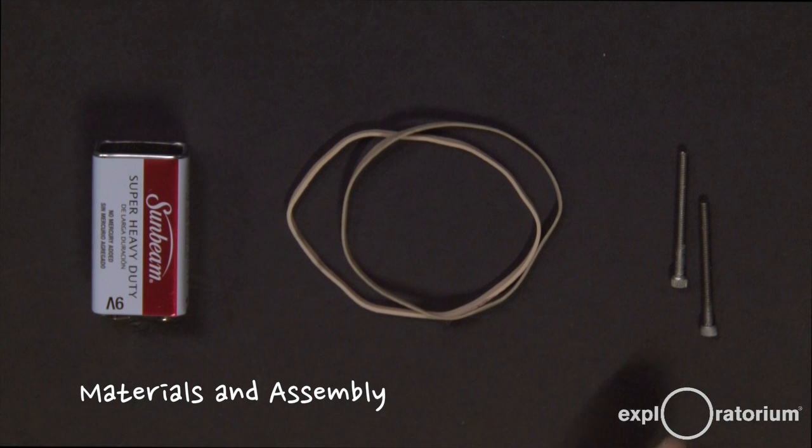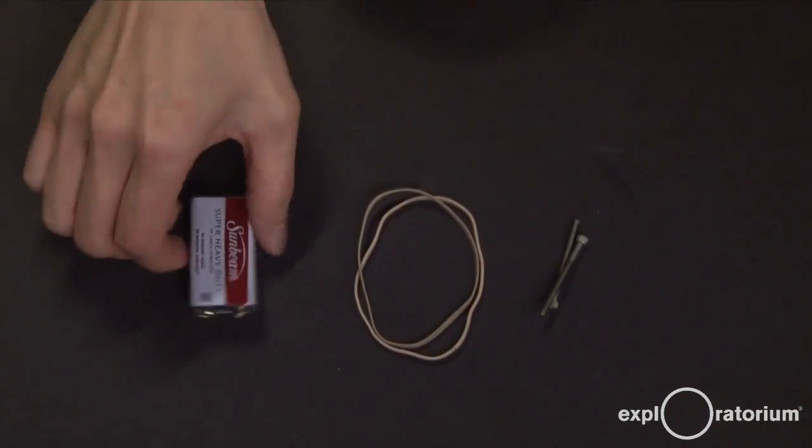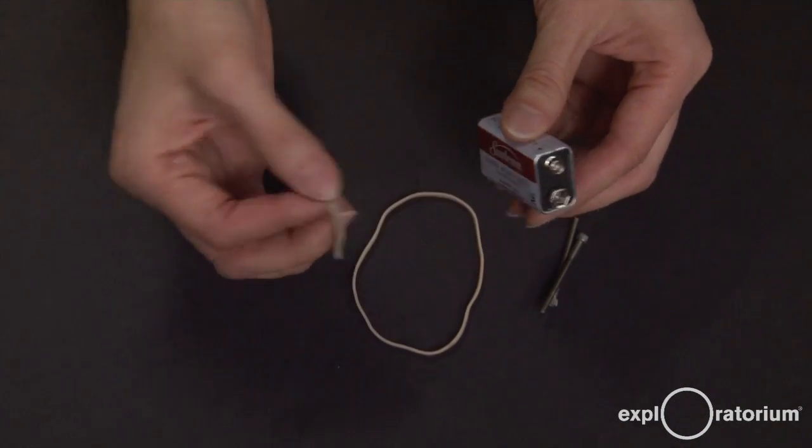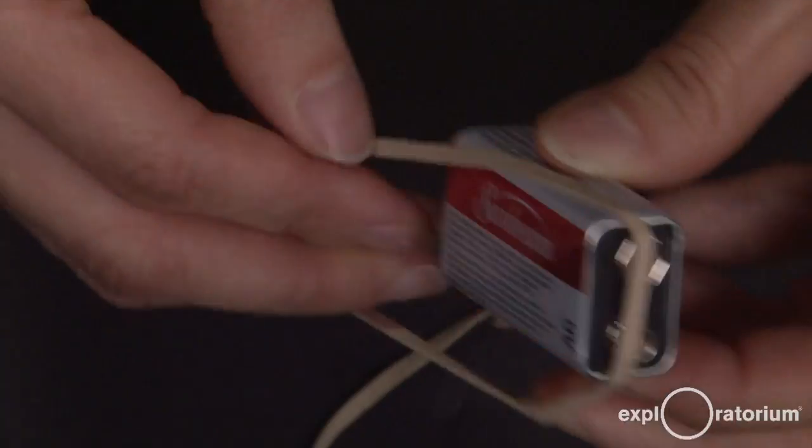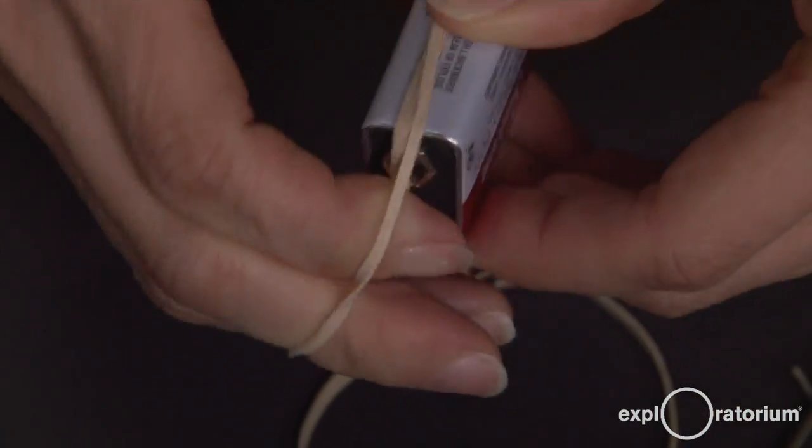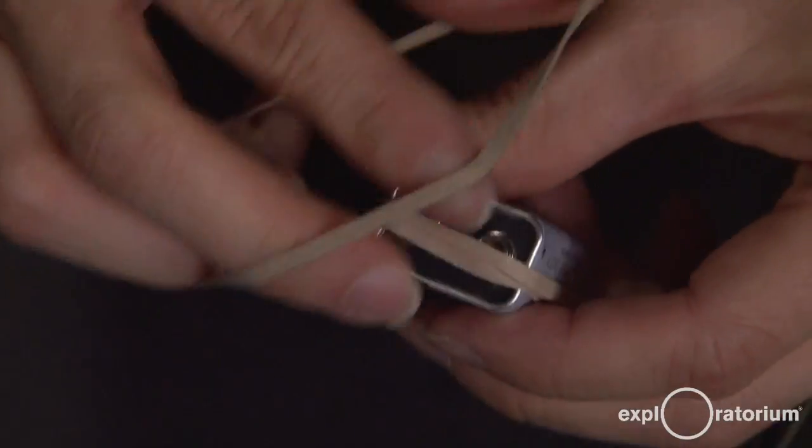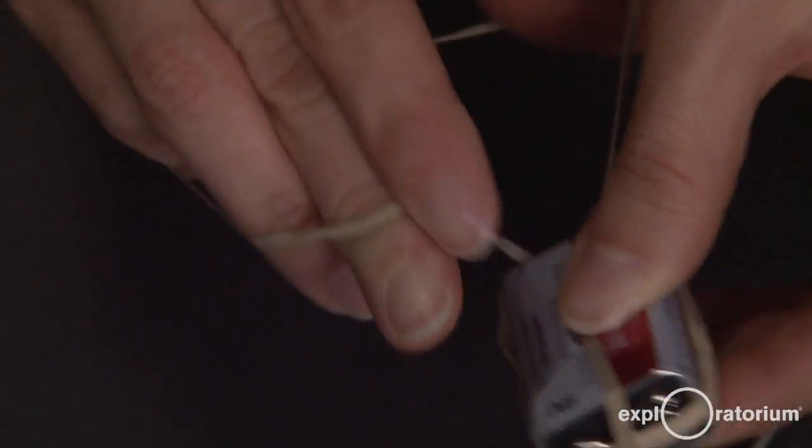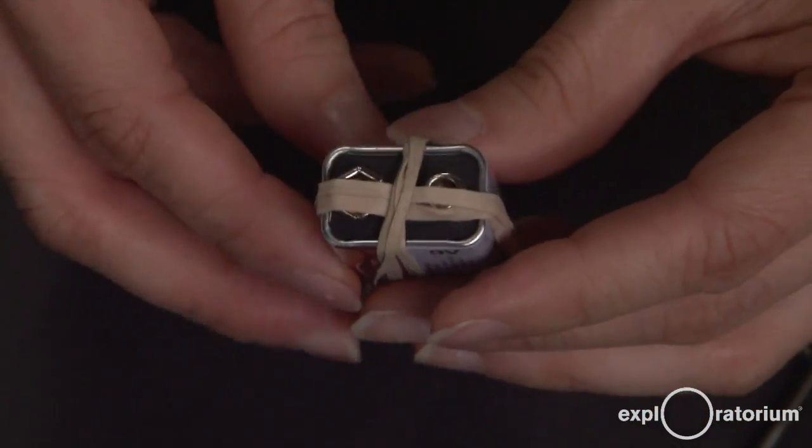To make your electrolysis device, you're going to need two stainless steel screws, two rubber bands, and a 9-volt battery. The device is incredibly simple to make. You take your 9-volt battery and wrap one of the rubber bands across the terminals. I'm going to wrap this around twice so that it stays put. And then take the second rubber band and wrap it around the other way, kind of the narrow end of the battery.